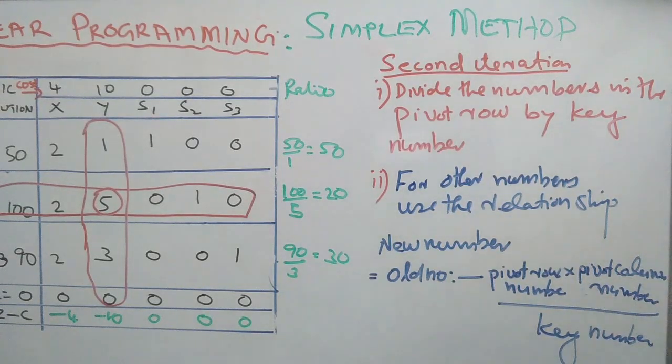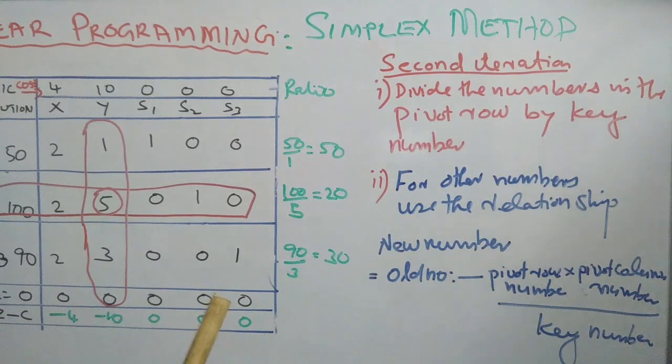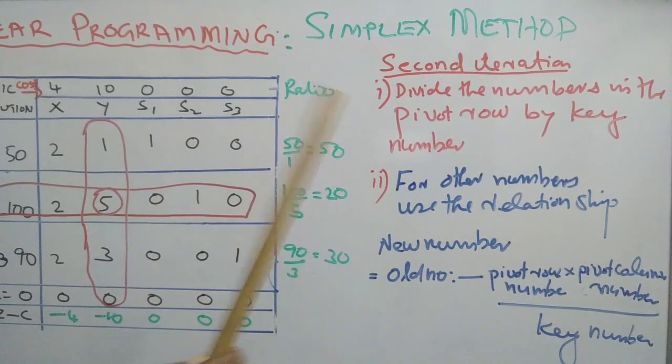The second iteration table is starting now. The Simplex method is an iterative method. We discussed the first iteration table, and now the second iteration table is being discussed. We are moving from iteration 1 to 2, from 2 to 3, for obtaining an optimum solution — that is, where all Z minus C values are 0 or more than 0. How will we form the second iteration table?